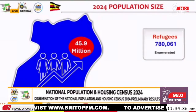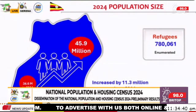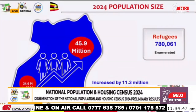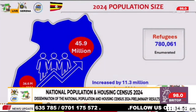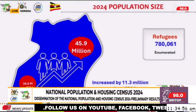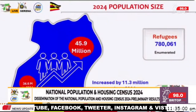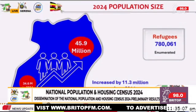Up from 34.6 million counted in 2014, meaning there is an increase of 11.3 million in the last 10 years. That number includes refugees — those are the refugees found on the census night in Uganda: 780,061.